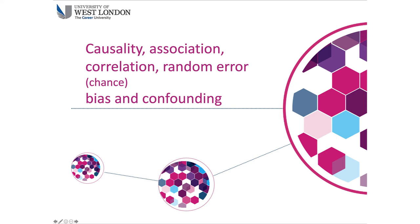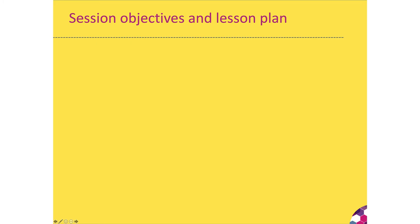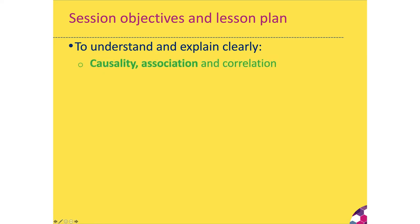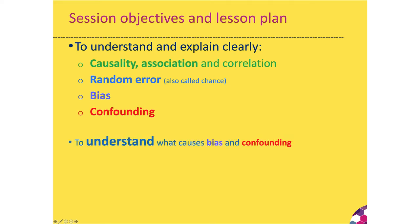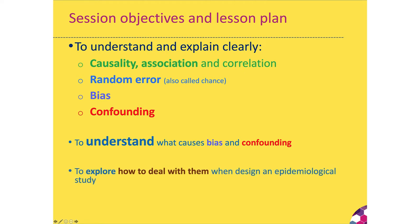Hello and welcome to this video lecture on Causality, Association, Correlation, Random Error, Bias and Confounding. In this session we will look to understand and explain clearly causality, association and correlation, random error, bias, and confounding. We will look at the causes of bias and confounding and how we can deal with them when we're designing an epidemiological study, and we'll do some practical exercises in the apply session.